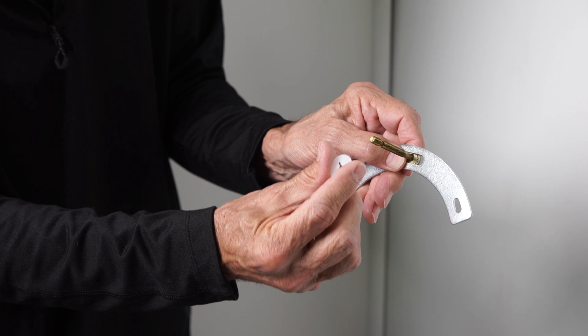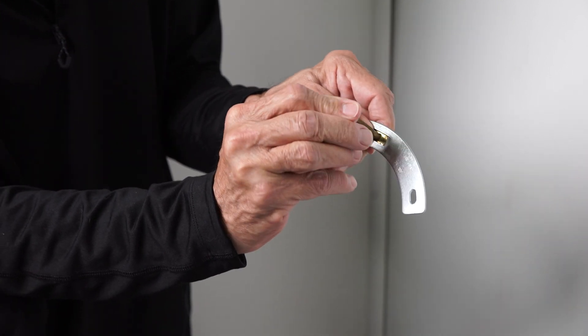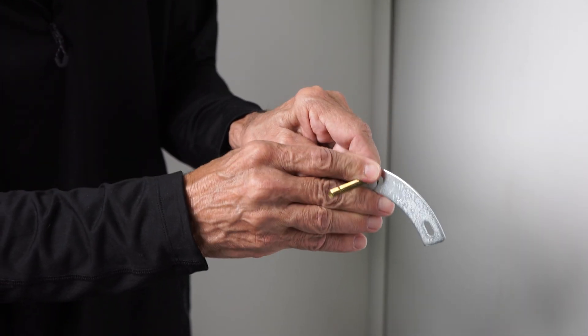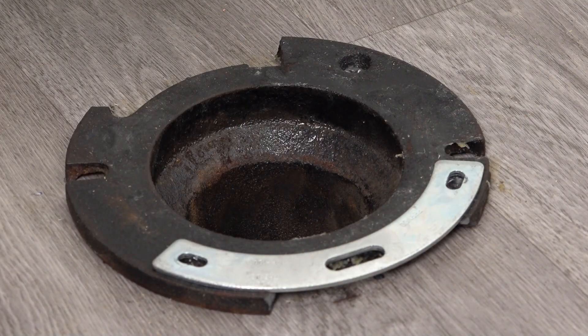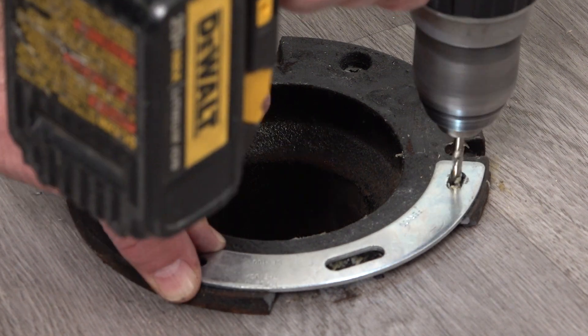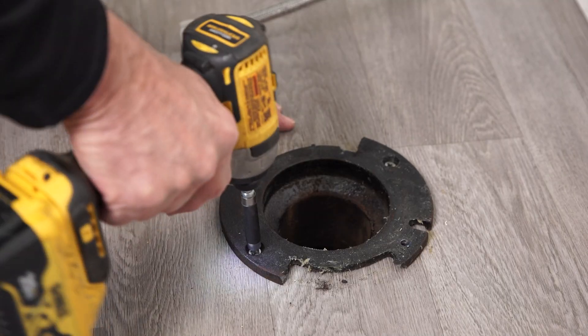Insert the toilet bolts through the center hole of the Fix-A-Flange and secure using the plastic locking washer. Mark and drill three sixteenth inch holes through the flange and into the floor, then secure the Fix-A-Flange in place using the included screws.